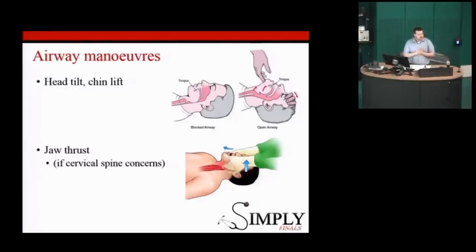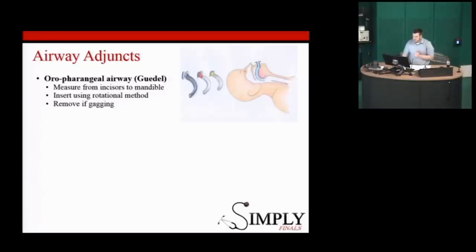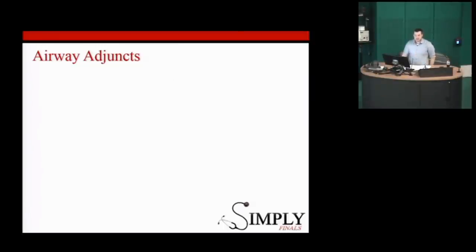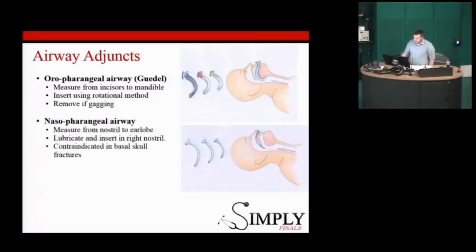Airway adjuncts. The Guedel airway, also known as the oropharyngeal airway — how do we measure for it? It's hard to hard: from the incisors to the angle of the jaw. The other one is the nasopharyngeal airway — that's soft to soft: from the nostril to the earlobe. Remembering that we wouldn't want to insert a nasopharyngeal airway if we're worried about trauma or basal skull fractures, because you could poke through into the brain.